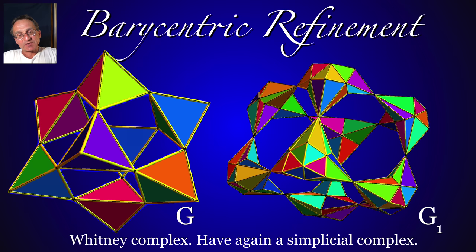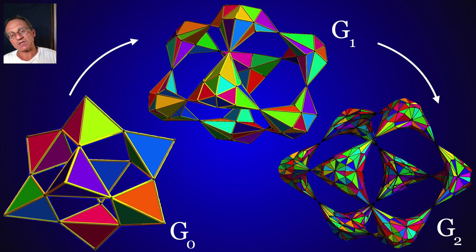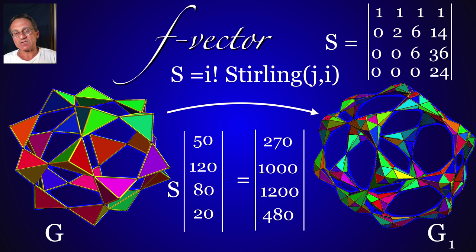About barycentric refinements, it produces an interesting dynamical system. We get from a complex a new complex, and we can iterate this process. The combinatorics is pretty well understood. There is a matrix, a universal matrix, which tells how the f-vector grows.